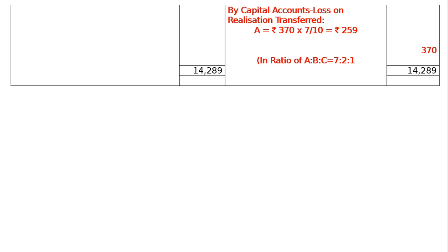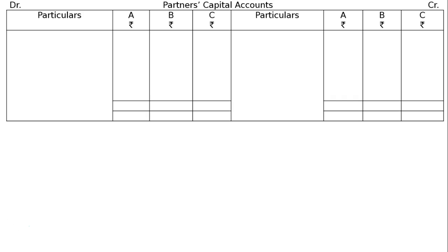A will get Rs. 370 multiplied by 7/10 = Rs. 259. B gets Rs. 74 and C gets Rs. 37, that is 7/10, 2/10, 1/10. Now, Partners' Capital Accounts for A, B, and C.